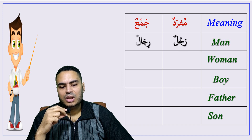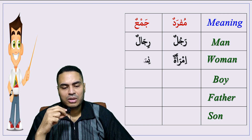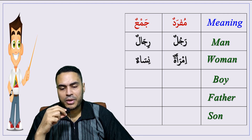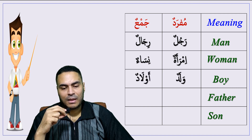Man — rajulun, plural: rijal. Woman — imra-atun, plural: nisa'. Boy — waladun, plural: awlad.